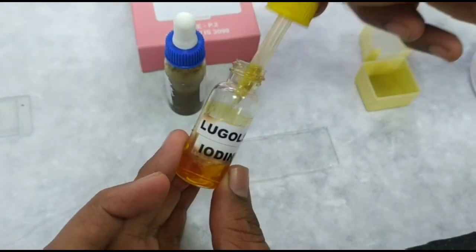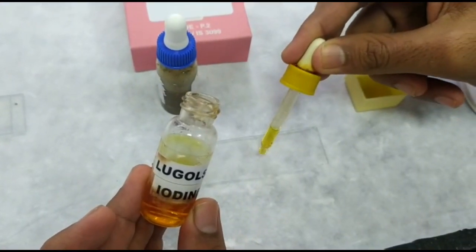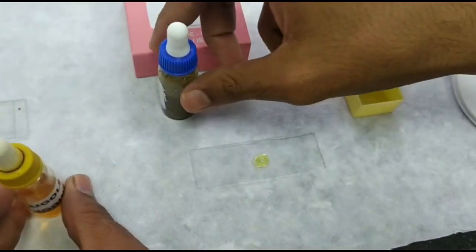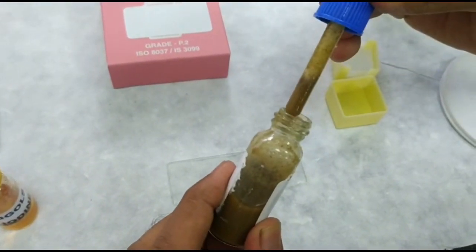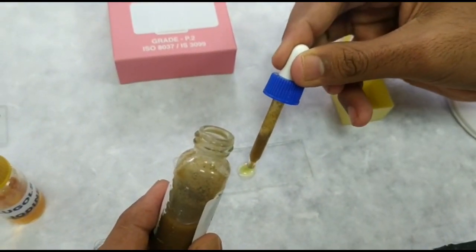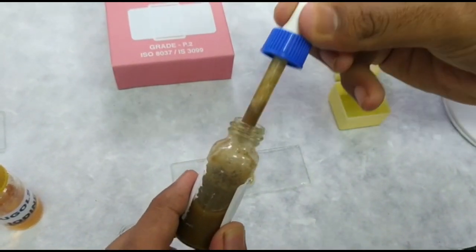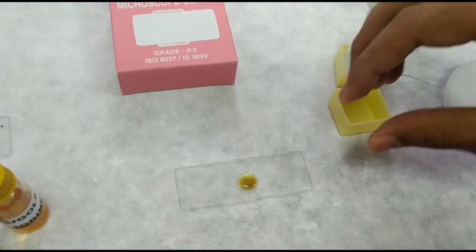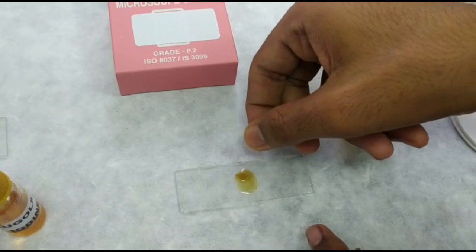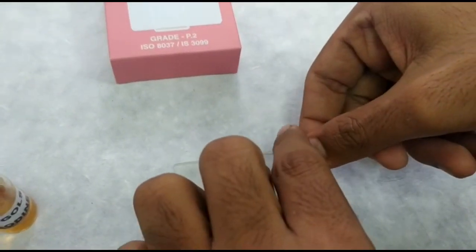For iodine mount, take one drop of iodine and one drop of stool specimen. Mix it well with the corner of the cover slip and place it as previously told.